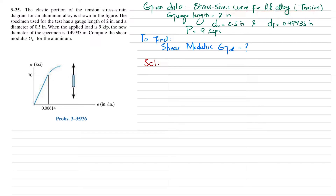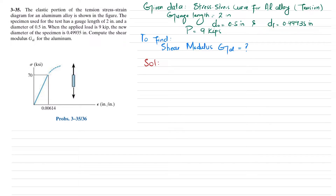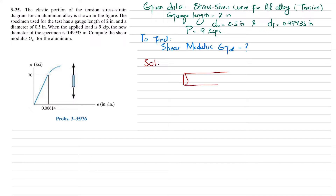The given data: stress-strain curve for aluminum alloy in tension, gauge length is 2 inches, original diameter of the specimen is 0.5 inch, and when a load of 9 kips is applied the diameter reduces to 0.49935 inch. What we have to find is the shear modulus.